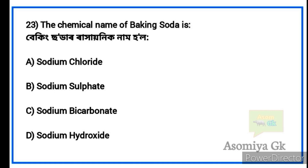Next question: What is the chemical name of baking soda? Option C: Sodium bicarbonate. The chemical name of baking soda is sodium bicarbonate.